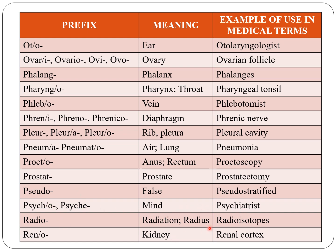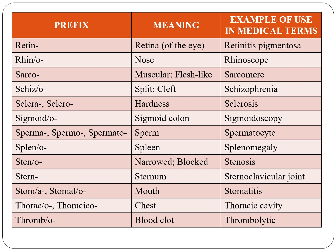Radio indicates radiation or radius, for example radioisotopes and radio-ulnar nerve. Reno also indicates kidney — nephro and reno both indicate kidney, for example renal cortex. Retino or retina indicates retina, for example retinitis pigmentosa.